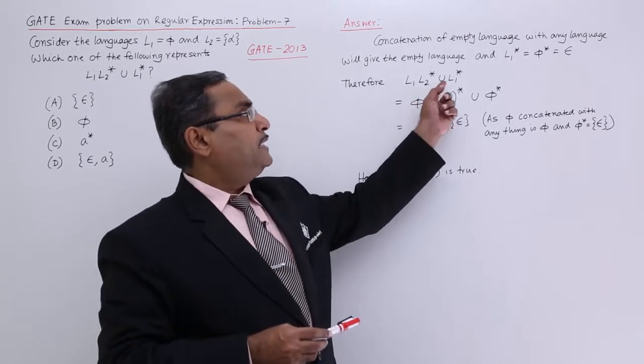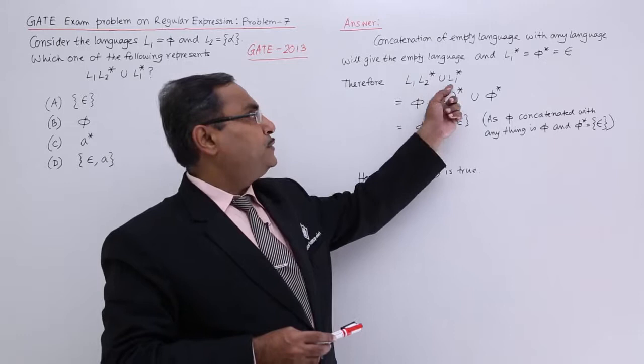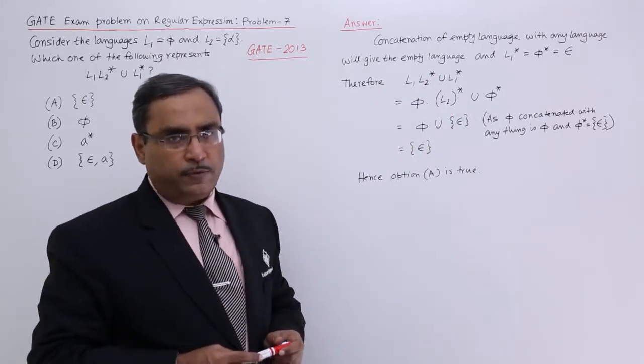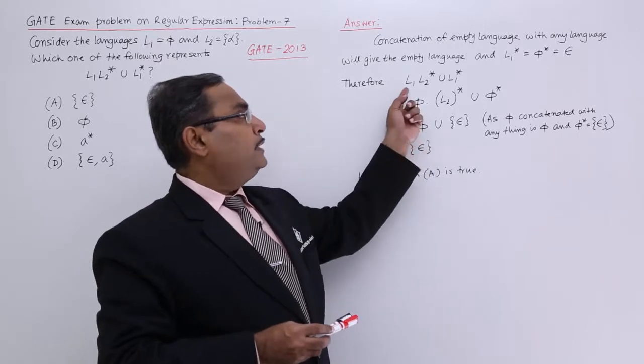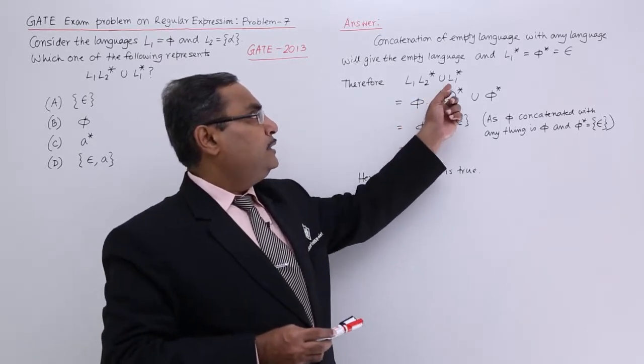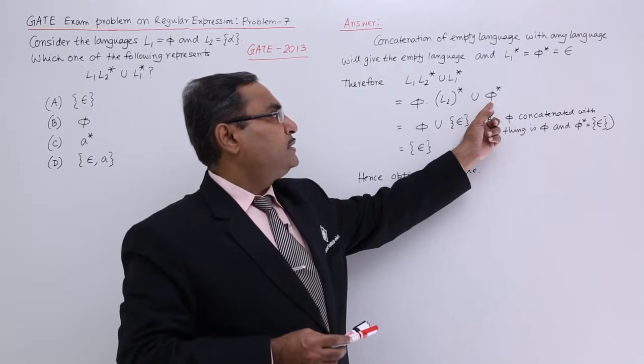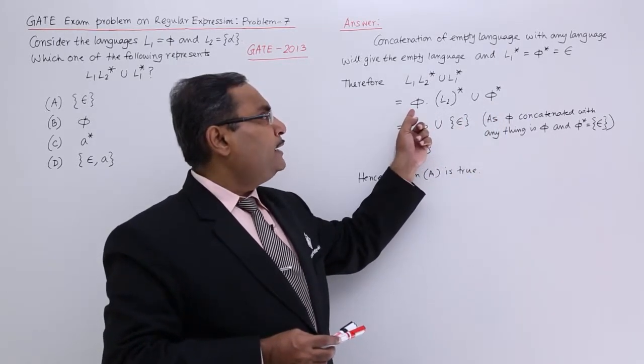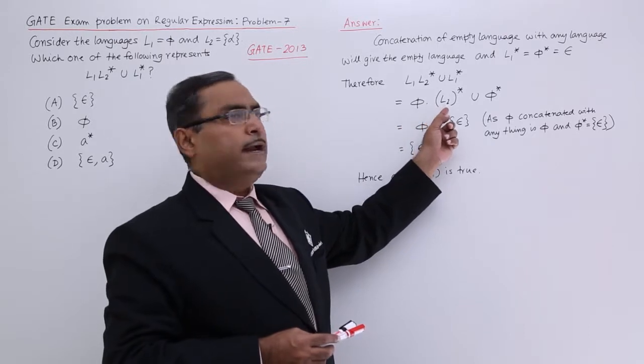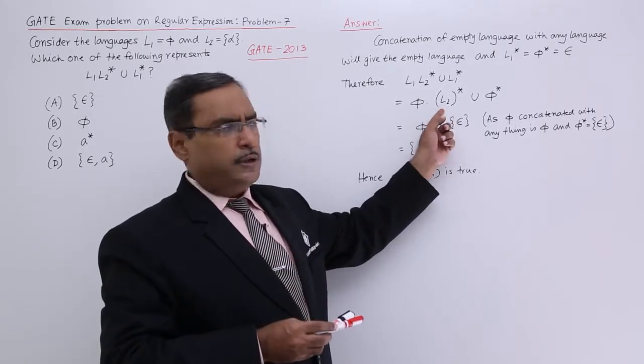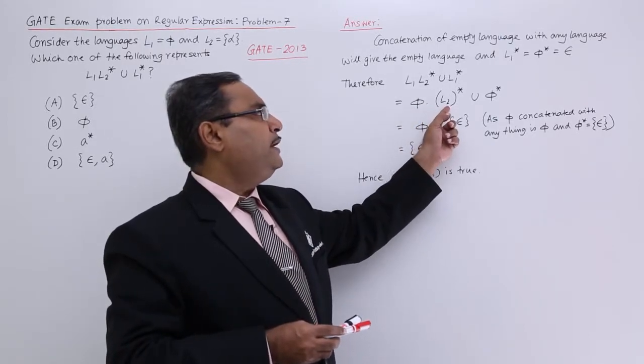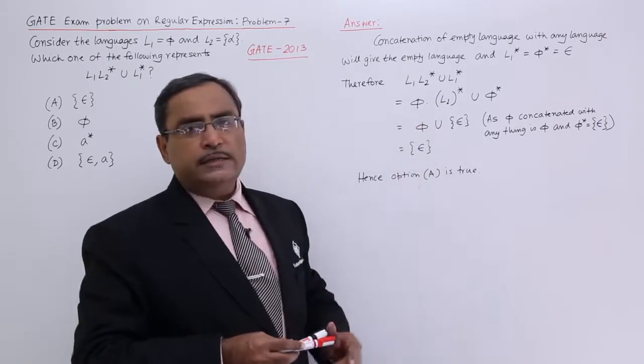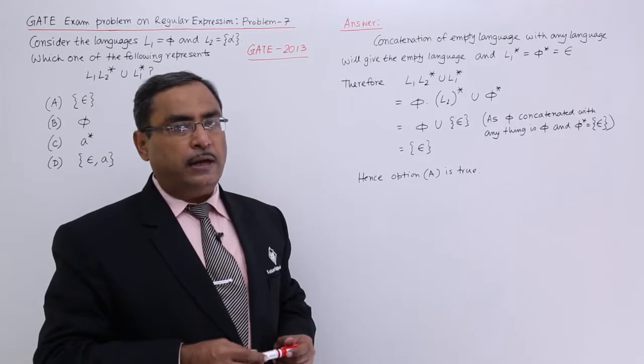Therefore, this is my regular expression: L1 L2 star union L1 star. I got this one from my question. What is L1? That is phi. What is L1 star? That is phi star, which is epsilon. Phi concatenation with any regular expression gives you phi because phi r is equal to phi. It was written in those particular identities.